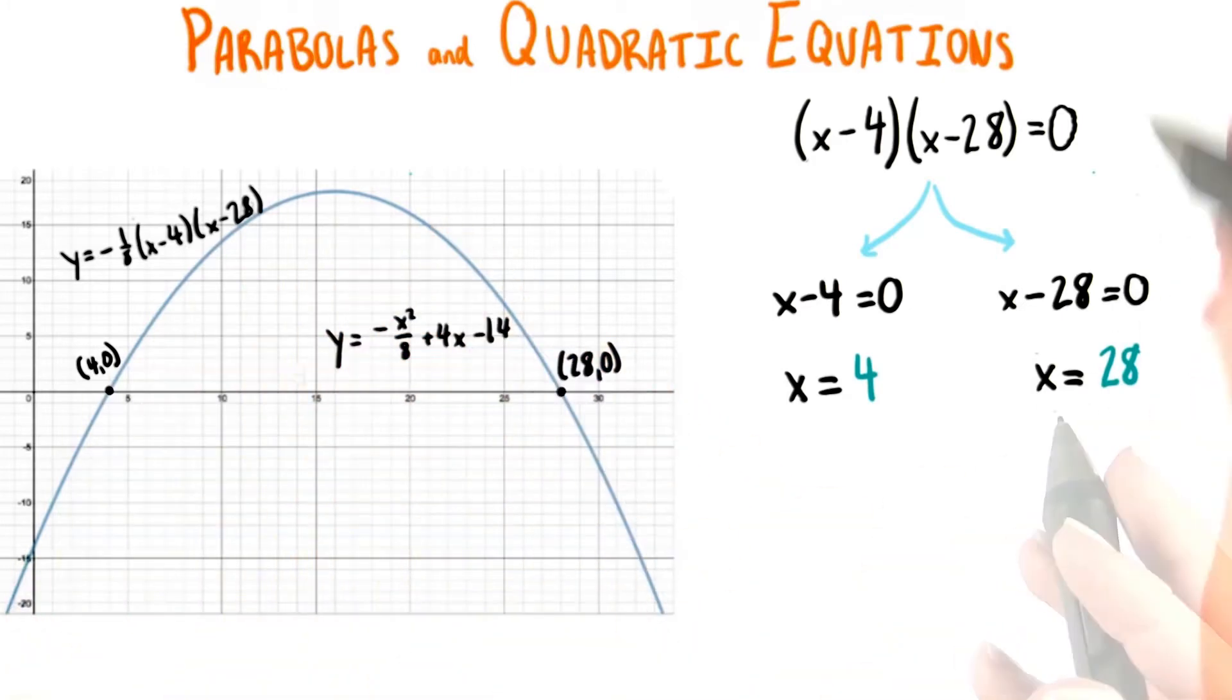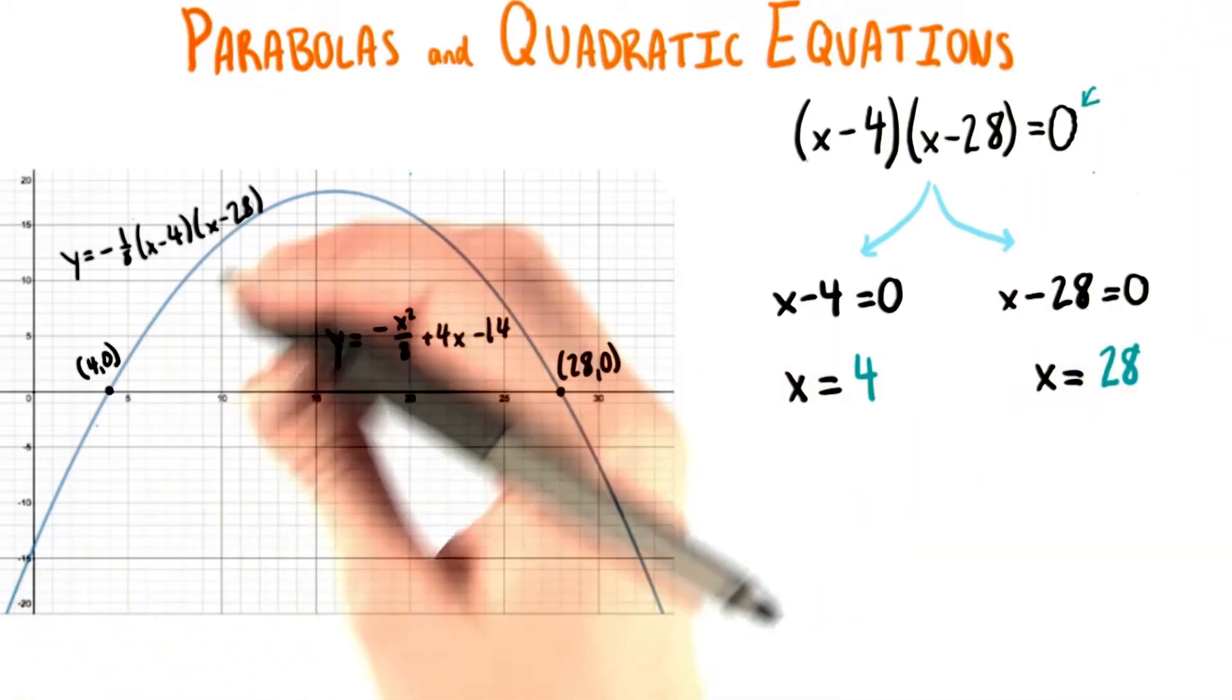So remember what we actually did? We started off by picking out 0 as the y value for which we wanted to find corresponding x values on this parabola.